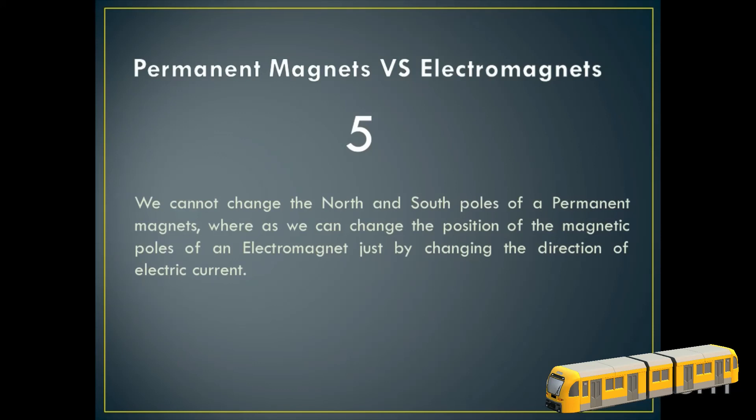How? By changing the direction of electric current. If you just change the terminals of the battery of the electromagnet, you will see the poles will also shift to the other place. Thank you so much.